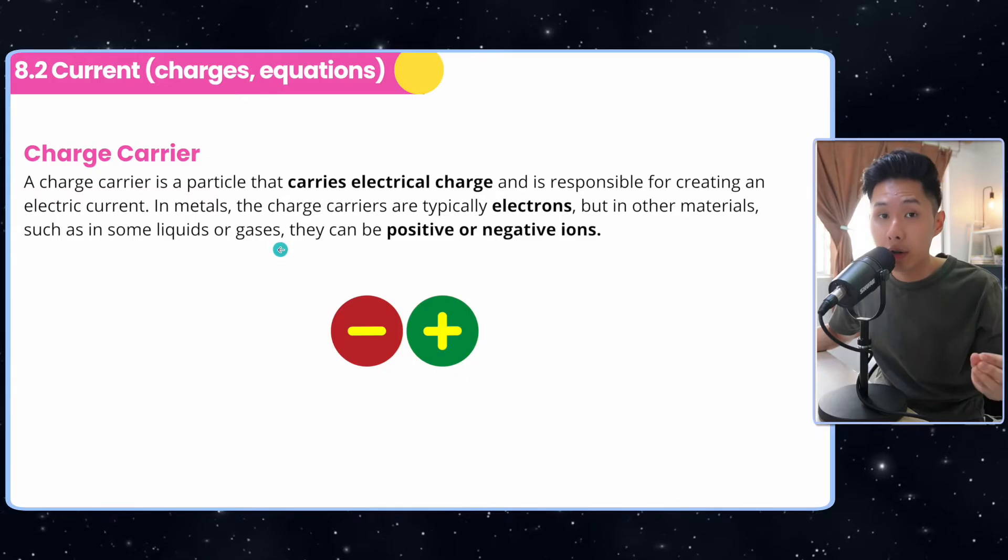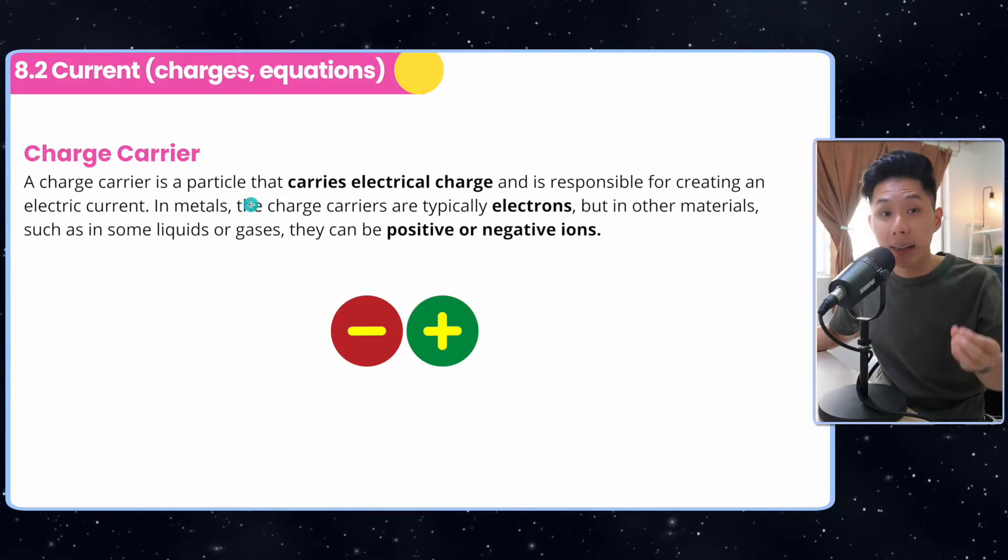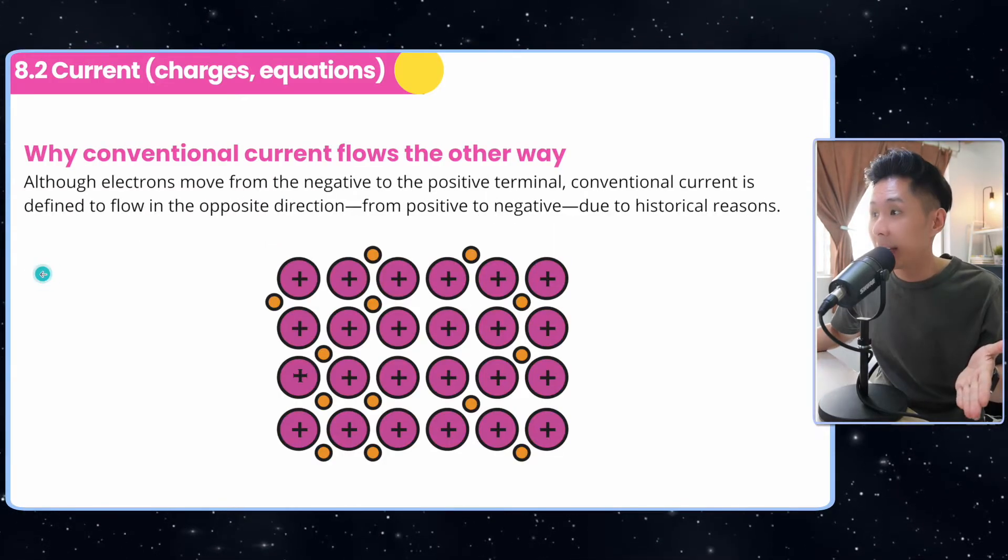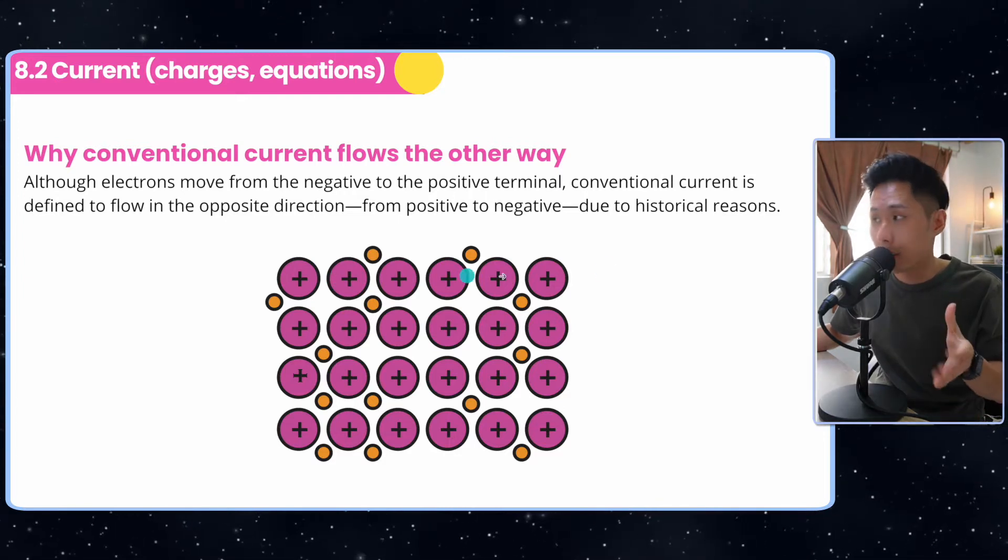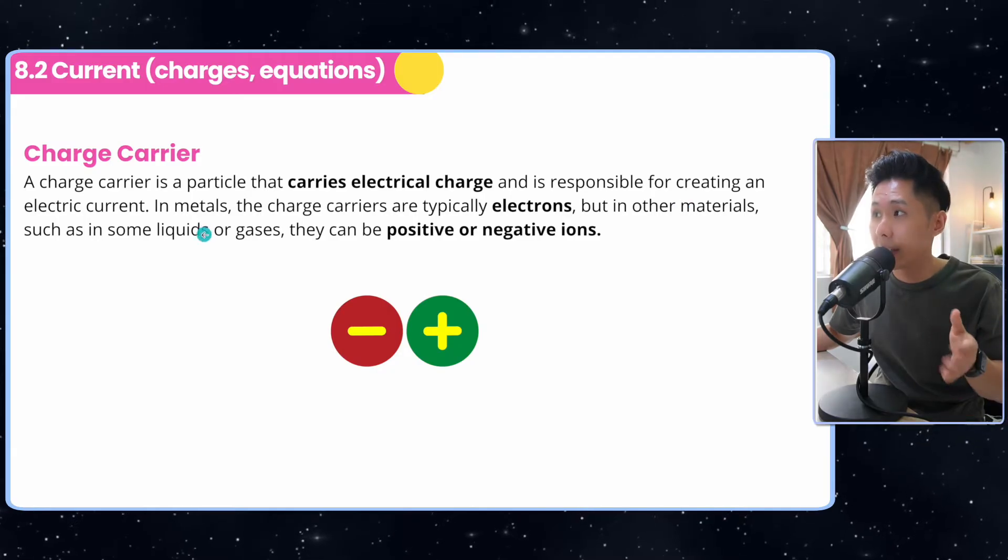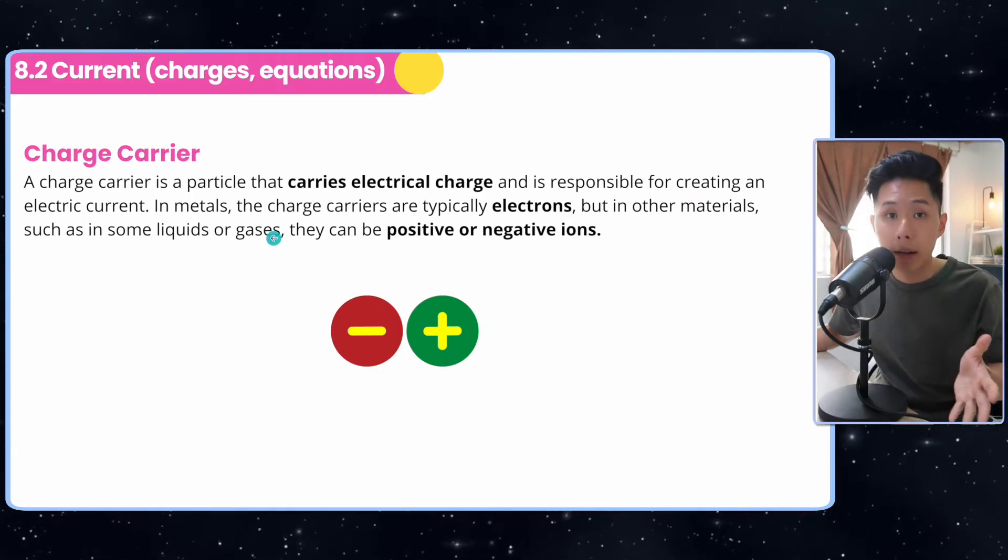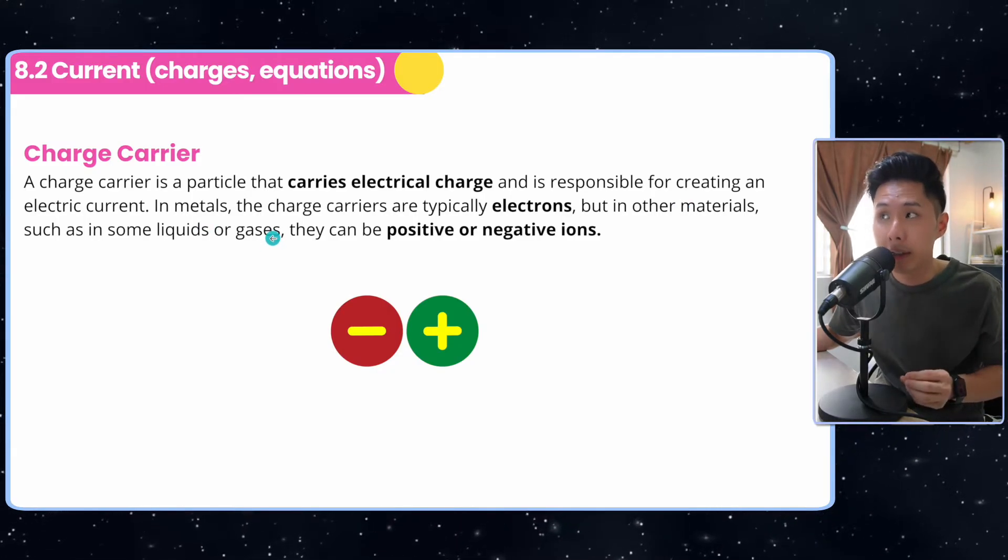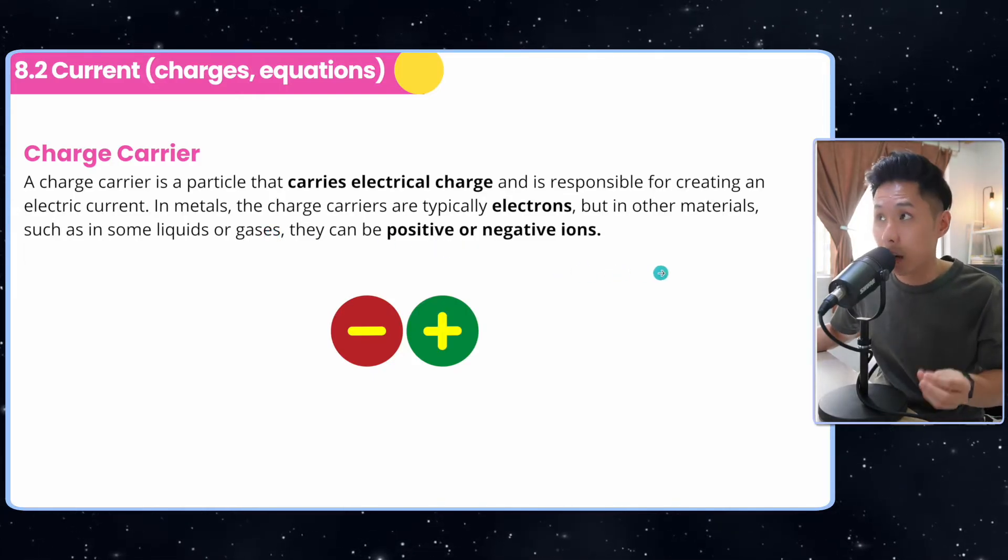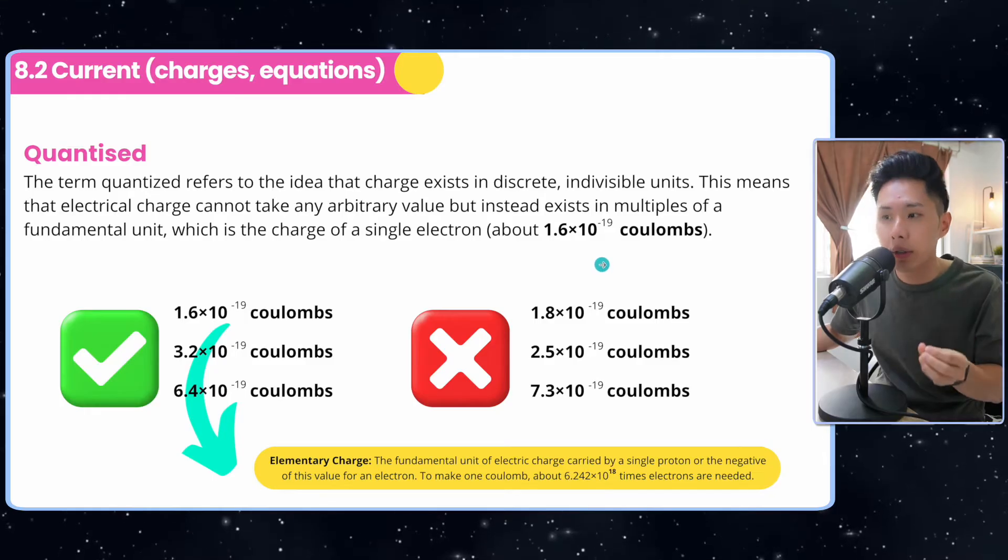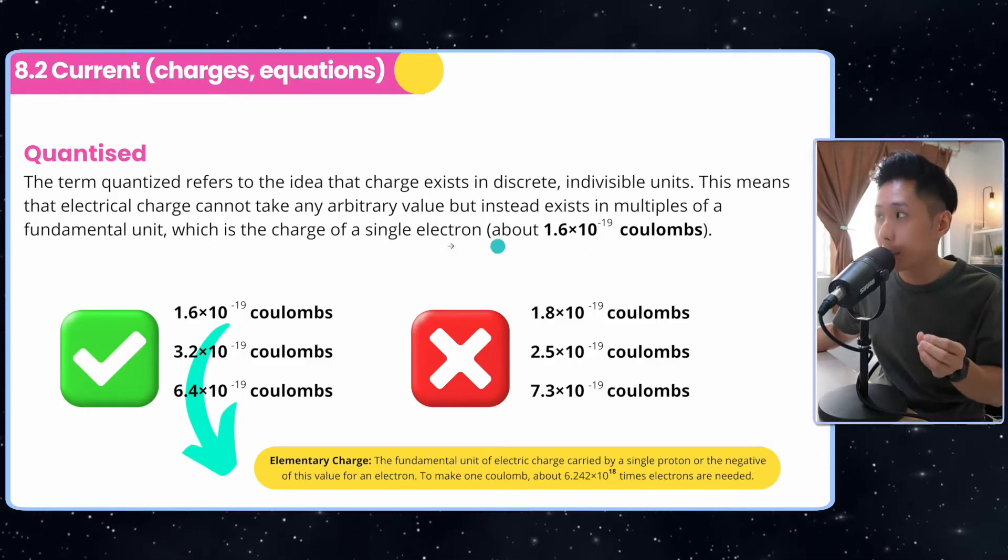Now let's look into the concept of charge carrier. Charge carrier is just a particle that carries electrical energy. And in our example here, our electrons, they are the charge carrier because they carry the charge. But in other materials such as liquid or gases, charge carrier can be the positive or negative ions. But in this video here, we're just going to focus on electrons as the charge carrier. And the amount of charge each charge carrier carry, especially for electrons, will be quantized.